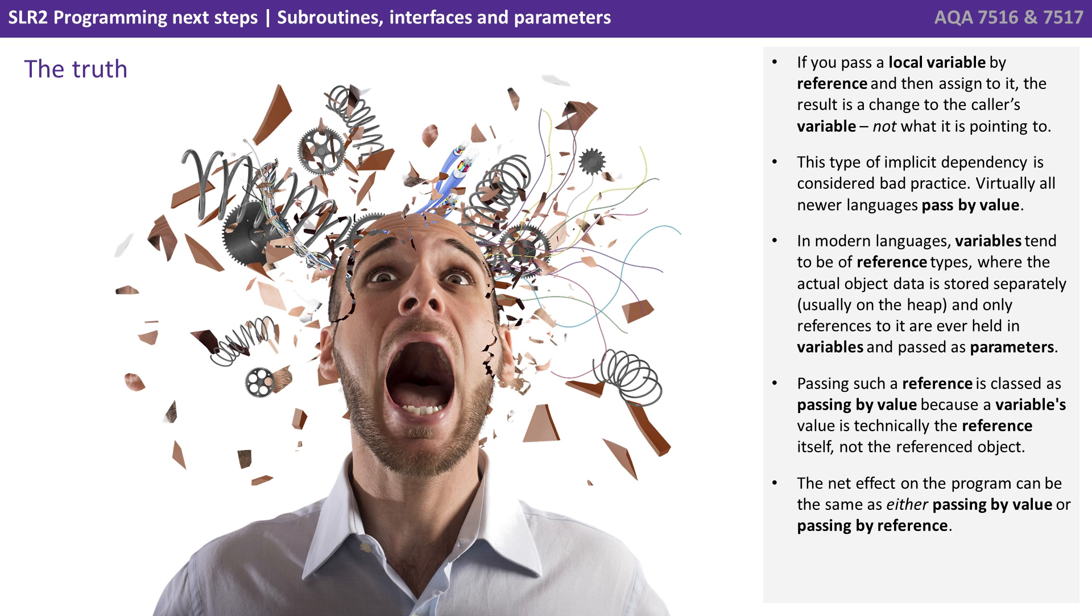If you've got that, let's just expose a little bit of truth to you. If you pass a local variable by reference, and then assign to it, the result is a change to the caller's variable and not what it's pointing to. This type of implicit dependency is considered bad practice. Virtually all new languages pass by value.